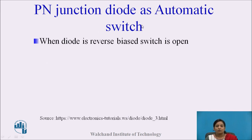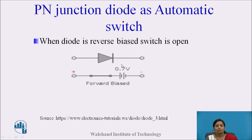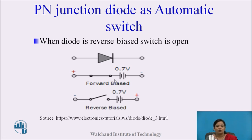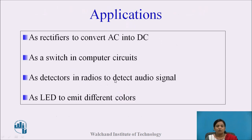The P-N junction diode can act as an automatic switch. When the diode is reverse biased, the switch is open; when the diode is forward biased, the switch is closed. Applications of P-N junction diode include: acting as a rectifier to convert AC into DC, as a switch in computer circuits, as a detector in radios to detect audio signals, and also used as an LED to emit different colors.